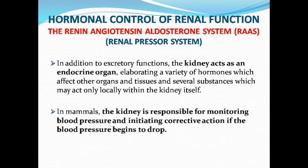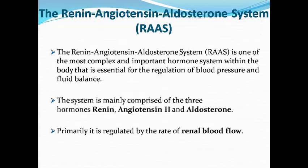If we look at the kidney, the kidney works as an endocrine organ. Now, if you look at the renin-angiotensin-aldosterone system, this is one of the most complex and important hormone systems in our body, which is an essential system to control blood pressure and fluid balance. This system mainly involves three hormones: renin, angiotensin II, and aldosterone. Primarily, it regulates the renal blood flow.